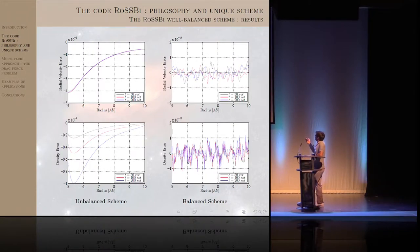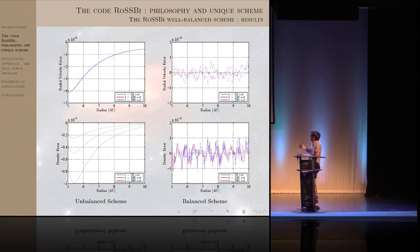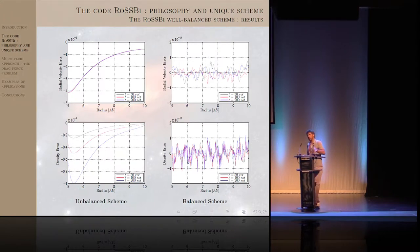Here I show the result we obtain with the well-balanced scheme. On the top left and bottom left, you see the radial velocity in the disk, and on the bottom the density. You can see that without a well-balanced scheme, you have significant errors. On the right, using the well-balanced scheme, the background flow — the steady state of the disk — is well evolved in time. After 200 rotations, the density error is less than 10 to the minus 11, so it's very efficient for long-term simulations.